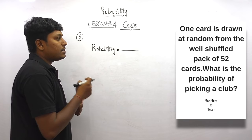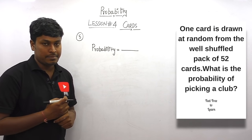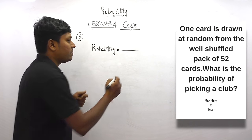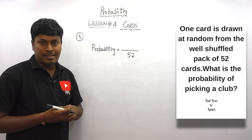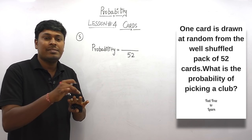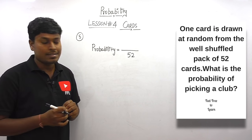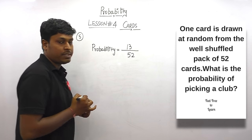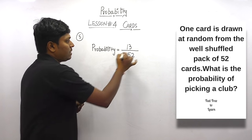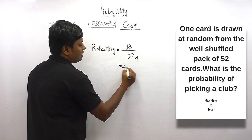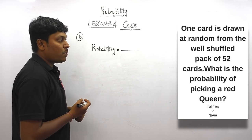Question number five: one card is drawn at random from a well-shuffled pack of 52 cards. What is the probability of picking a club? Total possibility is 52. We have four shapes and each shape has 13 cards. Our target is to pick a club card, so there are 13 club cards. Therefore 13 divided by 52 = 1/4.